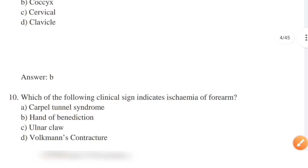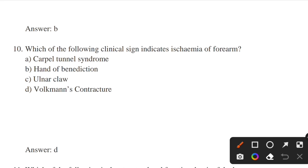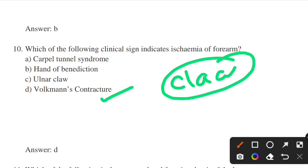Which of the following is the clinical sign indicating ischemia of the forearm? Options: carpal tunnel syndrome, hand of benediction, ulnar claw, Volkmann's contracture. Answer: option D — Volkmann's contracture. Volkmann's contracture is the permanent flexion contracture of the hand and wrist, resulting in a claw-like deformity. Passive extension of fingers is restricted and painful.